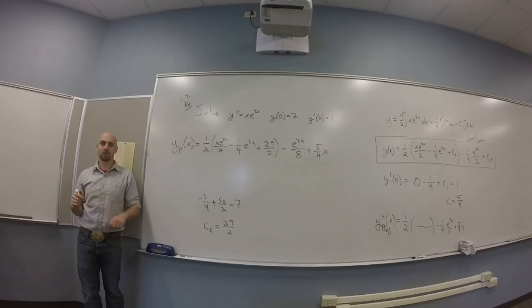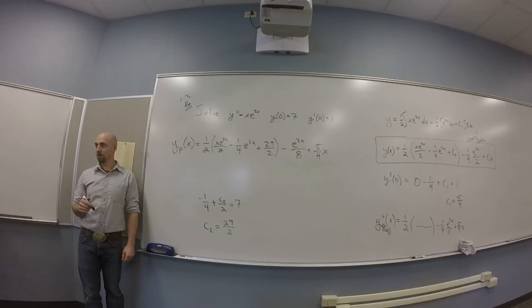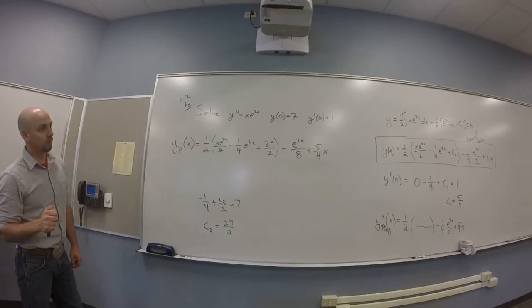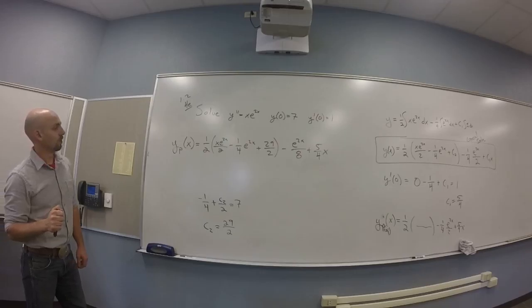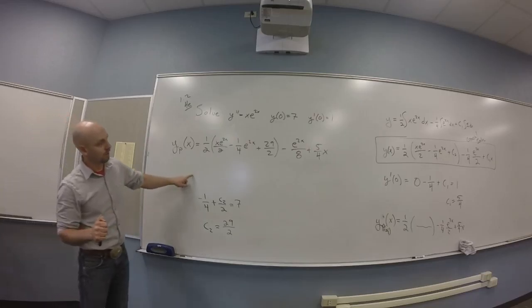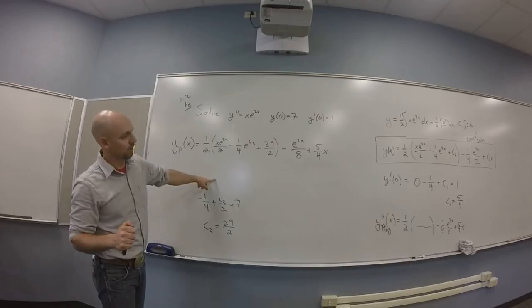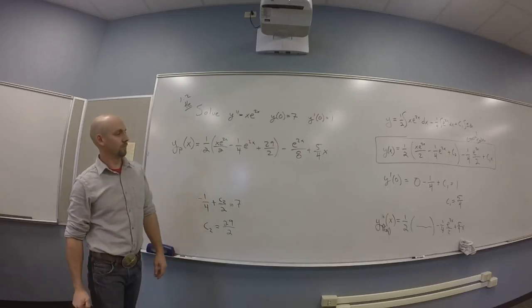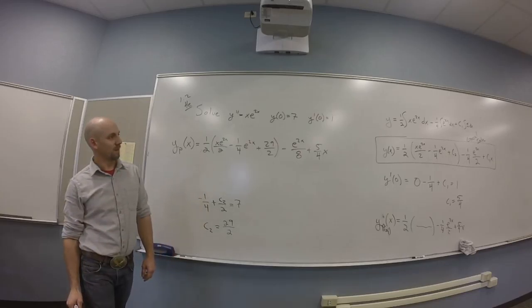So, I'm going to go like, okay, so Y of zero is that thing evaluated at zero. So, that's one half and then the first term there is zero. Minus one quarter plus C2 minus an eighth times one, right? Plus five fourths times zero is zero. So, all told here, I got minus an eighth plus C2 over 2 minus an eighth is apparently seven. Where'd the seven come from? Oh, you were able to evaluate the value. Yeah, that was the value I was supposed to get by evaluating Y of zero, right? So, all told here, I think I got minus a quarter plus C2 over 2 equals seven.